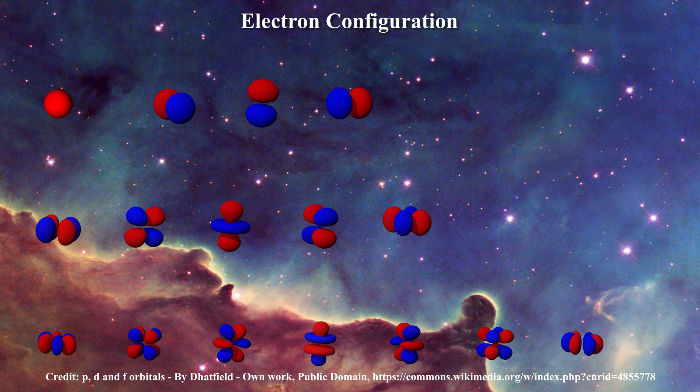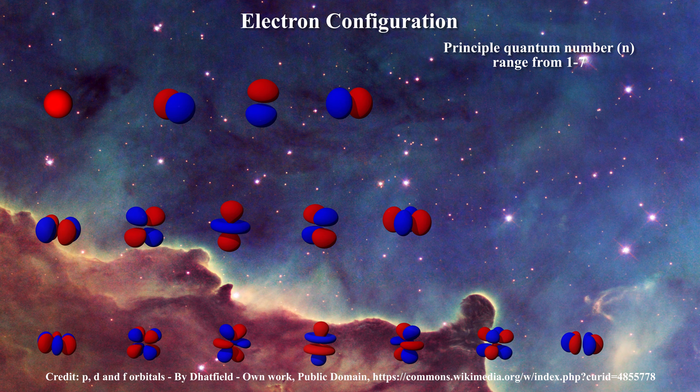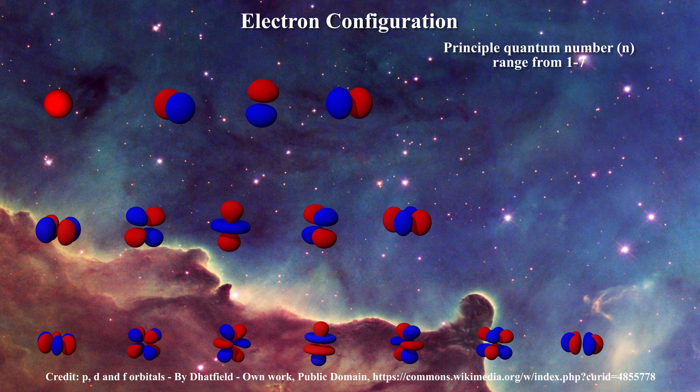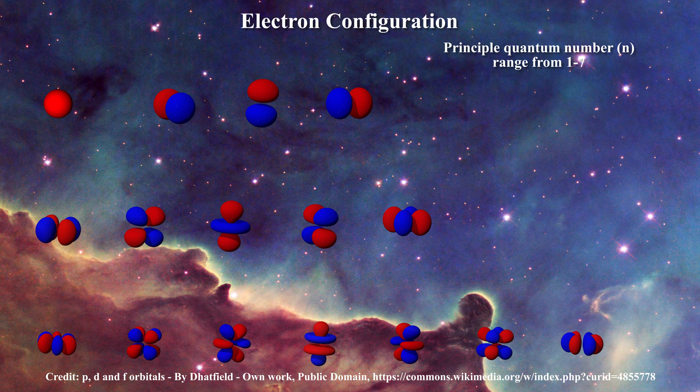Electronic orbitals are characterized by three quantum numbers. The principal quantum number denotes the energy level with which the orbital is associated. Principal quantum numbers are usually denoted by a lower case letter n and range in increasing energy from one through seven for the known atoms of the periodic table.